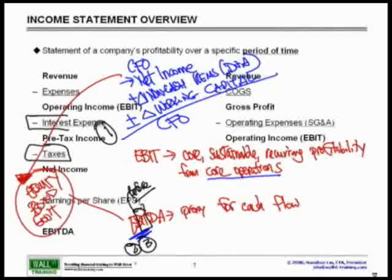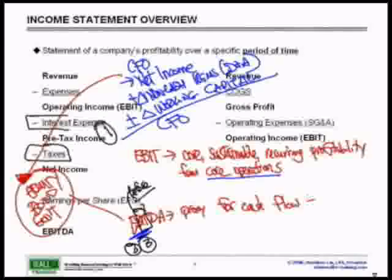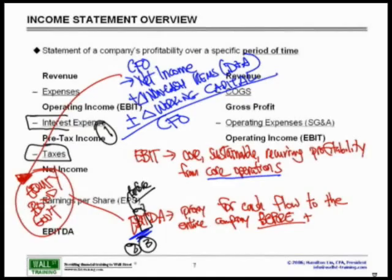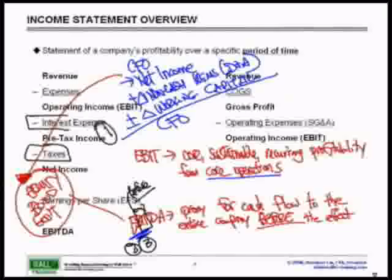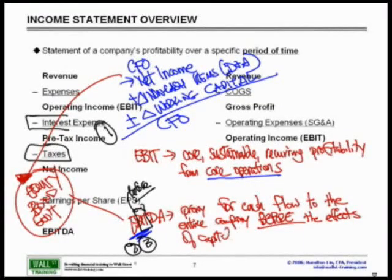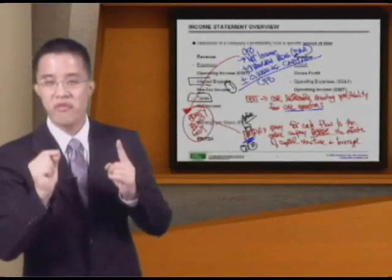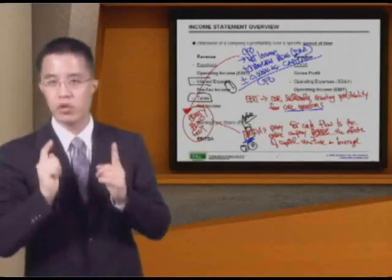So modify your definition of EBITDA as follows: EBITDA is a proxy for cash flow to the entire company before the effects of capital structure and leverage — leverage simply being the use of debt. This is the definition of EBITDA to use: it is a proxy for cash flow to the entire company before the effects of capital structure and leverage.